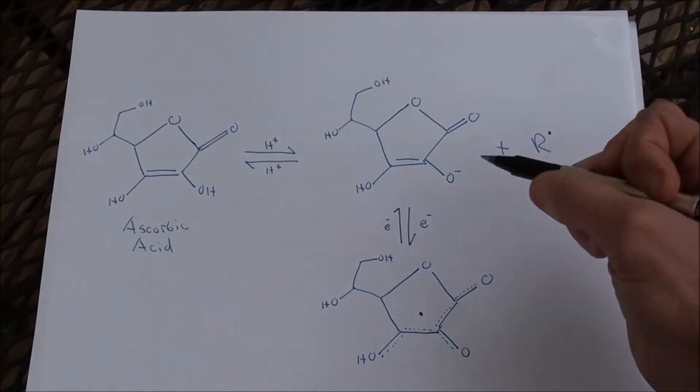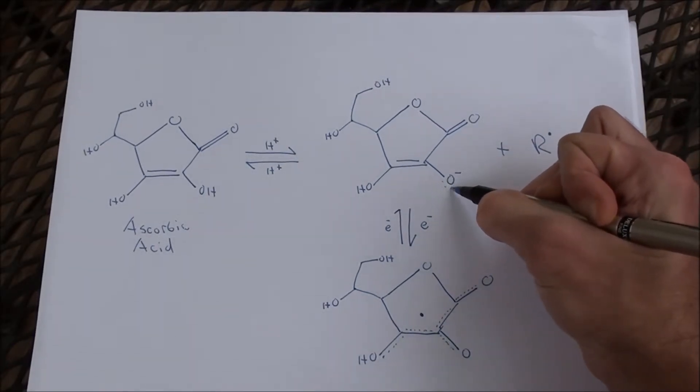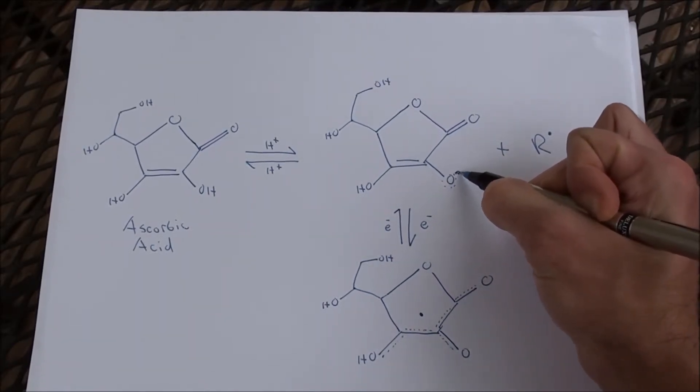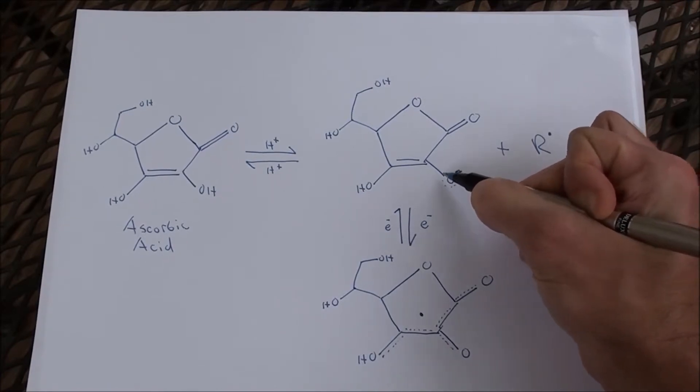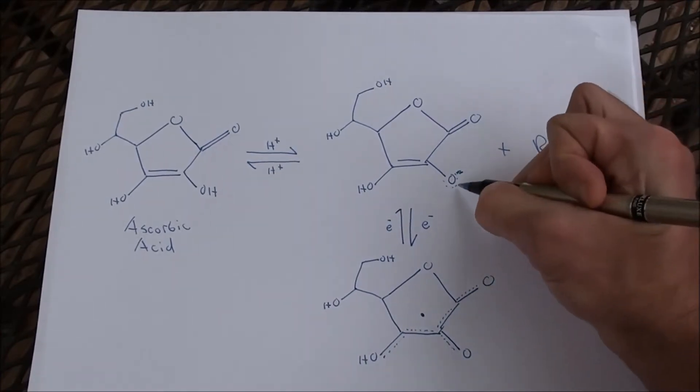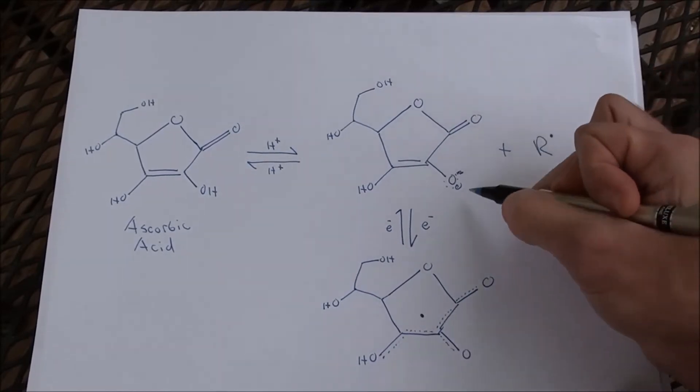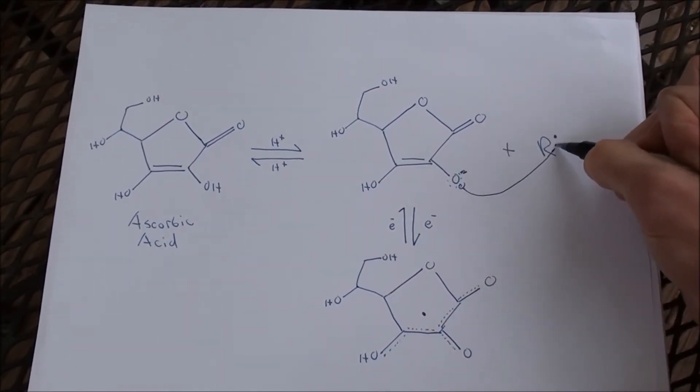So what happens is this oxygen atom, and here are the seven electrons: one, two, three, four, five, six, and one in the bond, in the covalent bond here, will take an electron, donate it to this free radical.